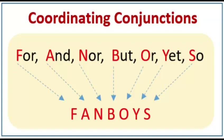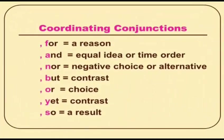The first type is coordinating conjunctions: for, and, nor, but, or, yet, so. We can summarize them in the word FANBOYS. We use 'for' for a reason and equal idea or time order; 'nor' for negative choice or alternative; 'but' for contrast; 'or' for choice; 'yet' for contrast; 'so' for a result.